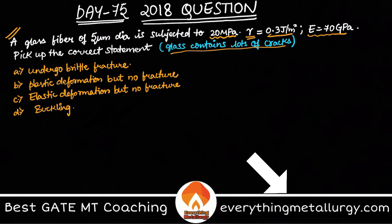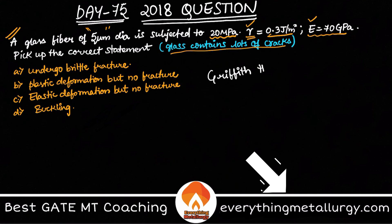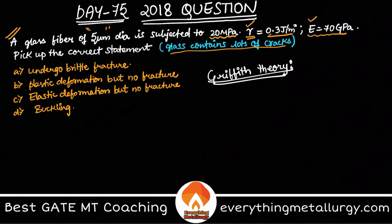By looking at these values we have the diameter, we know gamma, and we know E. To relate stress with all of these things, you use something called Griffith theory. Griffith theory is used for brittle materials — it gives the fracture stress of any given brittle material, and it is equal to the square root of 2Eγ divided by πc.